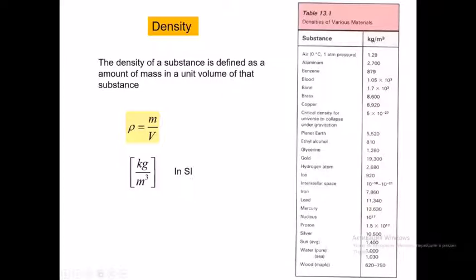For example, in this table the densities of various materials are given for gases, liquids, and solids. From this table you can see that air has a density of 1.29 kg per cubic meter, pure water is exactly 1,000 kg per cubic meter, copper is 8,920 kg per cubic meter, and gold has 19,300 kg per cubic meter.